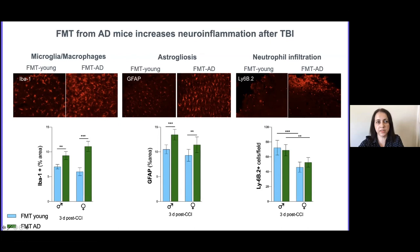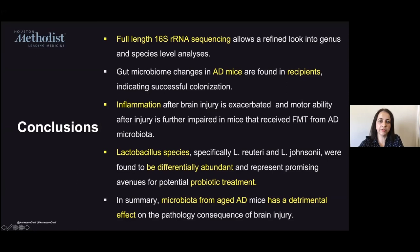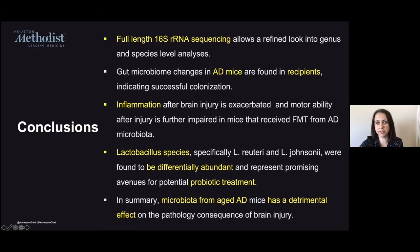In conclusion, full-length 16S rRNA sequencing allows us to refine the analysis down to genus and species level. Inflammation after brain injury was exacerbated and motor ability was worse in animals that received fecal matter transplants from the Alzheimer's microbiota. Lactobacillus species, specifically Lactobacillus reuteri and johnsonii, can be a good target for probiotic treatment for Alzheimer's disease. In summary, the microbiota from aged animals has a detrimental effect on the pathology and recovery of brain injury.